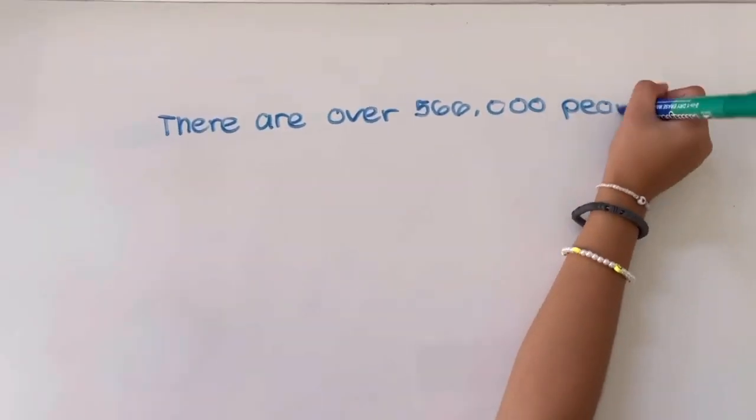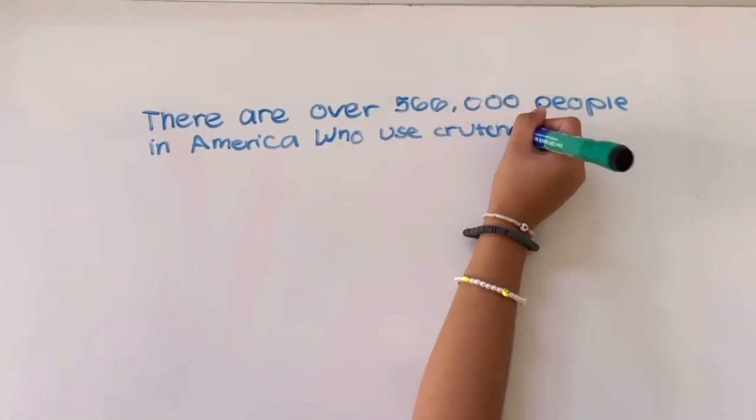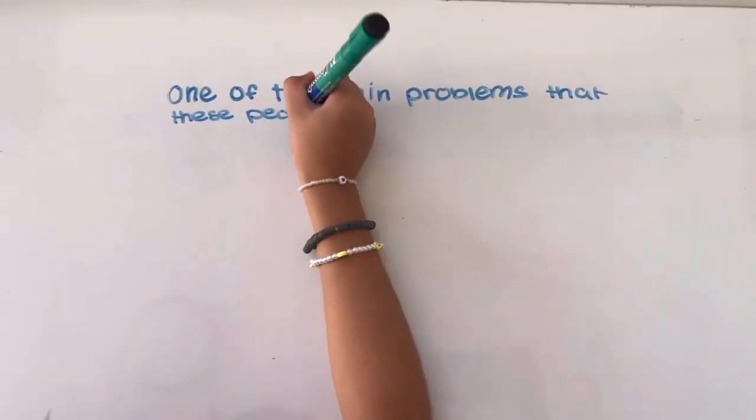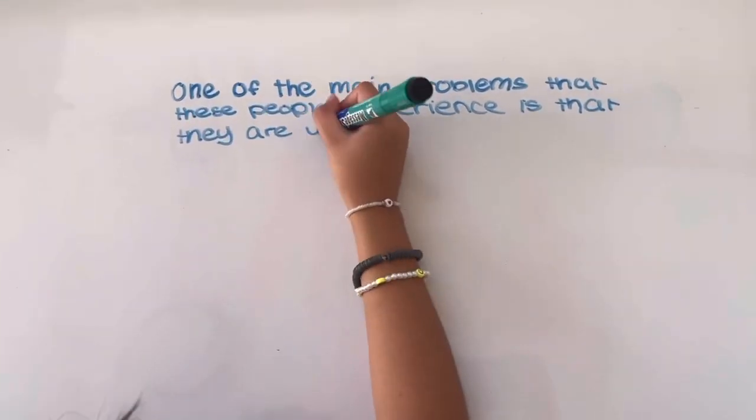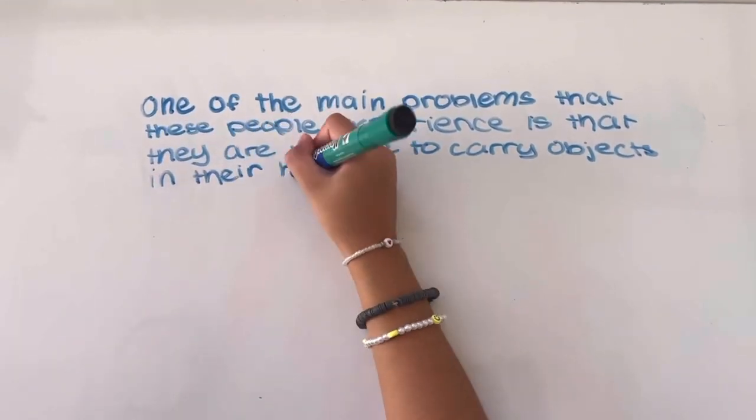There are over 566,000 people in America who use crutches every year. One of the main problems that these people experience is that they are unable to hold objects in their hands while walking.